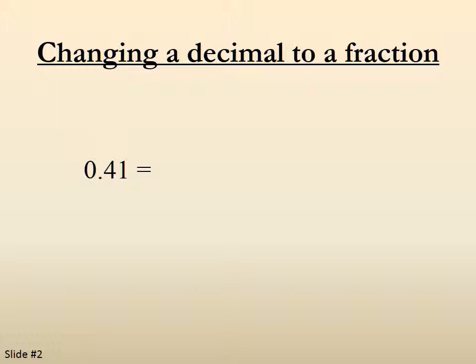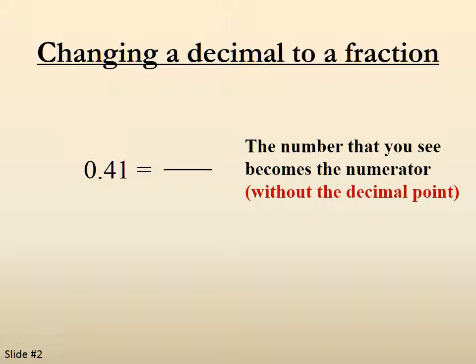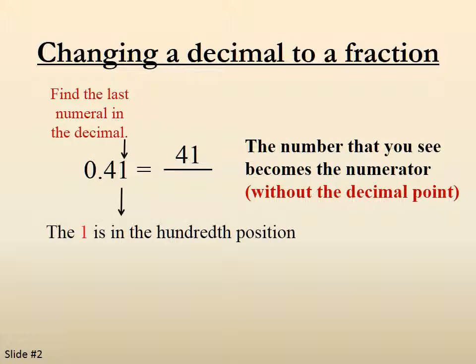Start with 0.41. Since we're going to make it into a fraction, we'll draw a fraction bar. The number that you see becomes the numerator, so we'll put 41 on top — we won't use a decimal point. We find the last numeral in the decimal, which in this case is a 1. The 1 happens to be in the 100th position, so we will put 100 in the denominator. So 0.41 becomes 41 over 100.